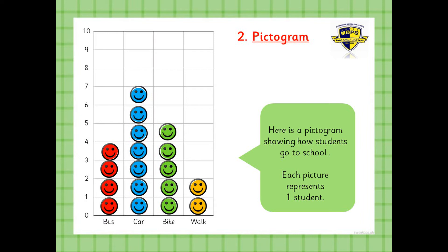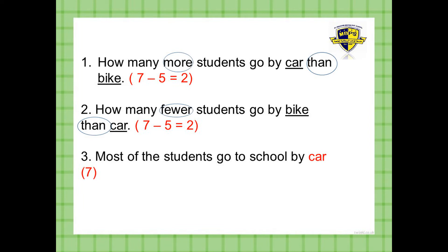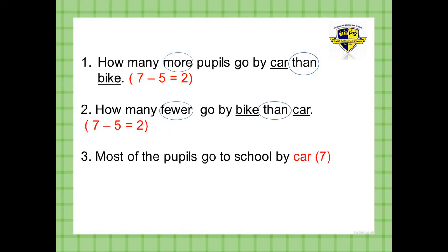Get your workbooks and have a look — it's all there. Let's have a look at the questions. How many more pupils go by car than bike? I want you to tell me how many more students go by car than bike. I want you to put a circle on 'more', and put a circle on 'than'. Then we're going to put a line under the two ways they go to school — by car and by bike.